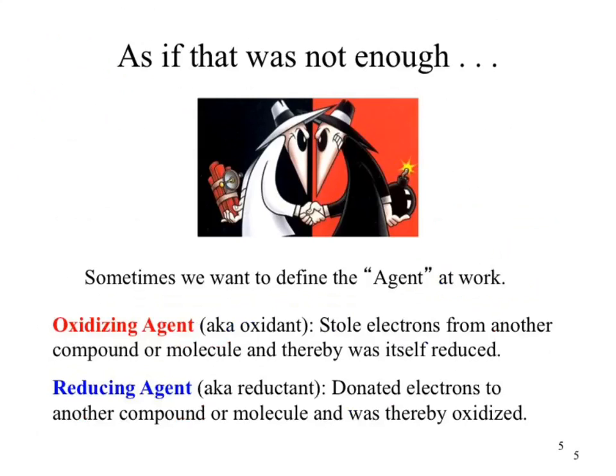So ultimately what these two extra definitions are is that an English major busted in and said you're applying oxidation and reduction in odd references — you have to make it an adjective. You introduce the idea of the -ing, or if you really wanted to, you could use the -ant ending. So an oxidant is the same thing as an oxidizing agent — it caused something else to be oxidized.